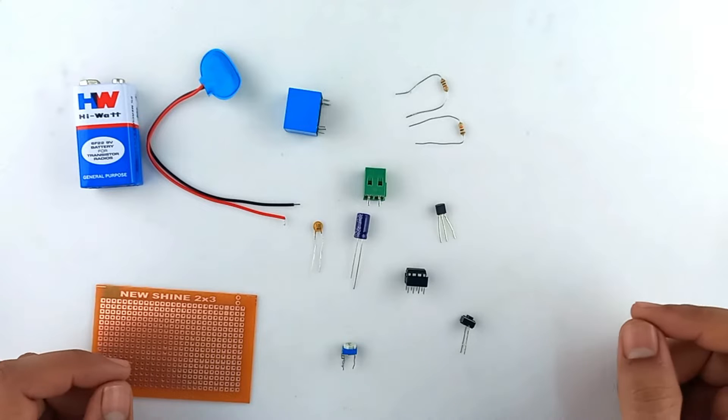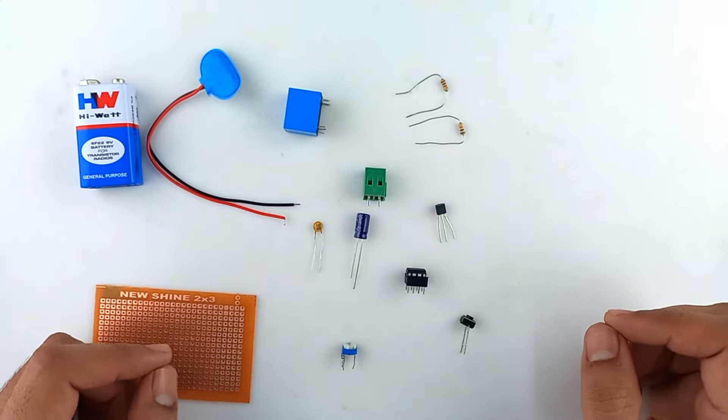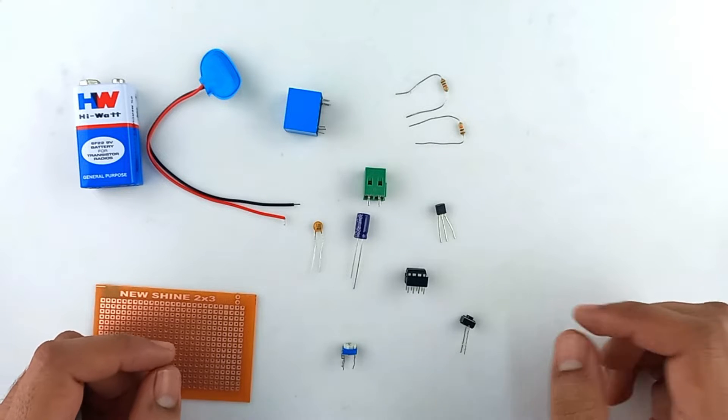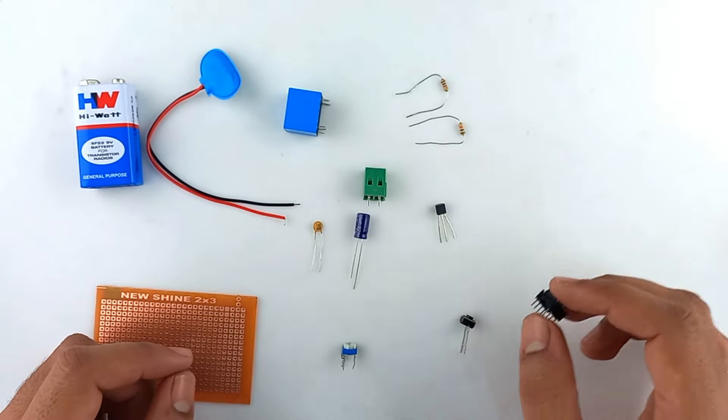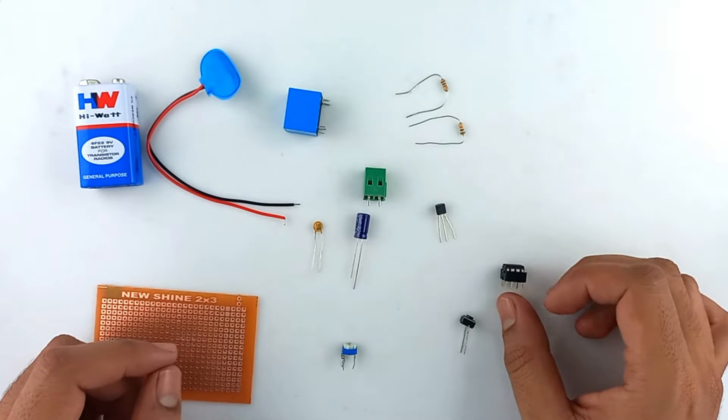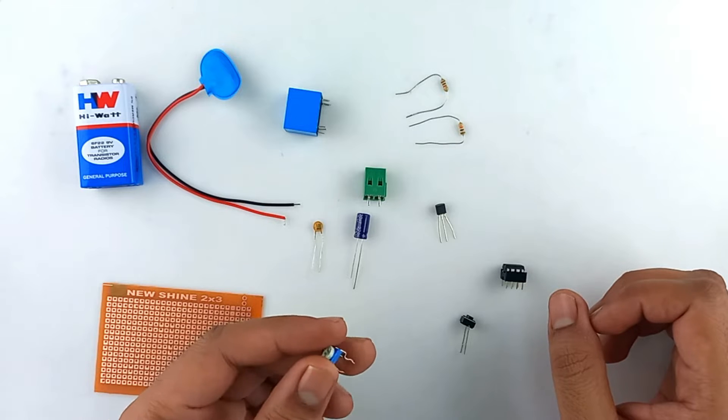Hello, welcome to Quartz Components. Today we are going to make an automatic power cut off circuit using a 555 timer IC that will automatically cut off the power after a preset time which can be varied using a potentiometer. So let's get started.